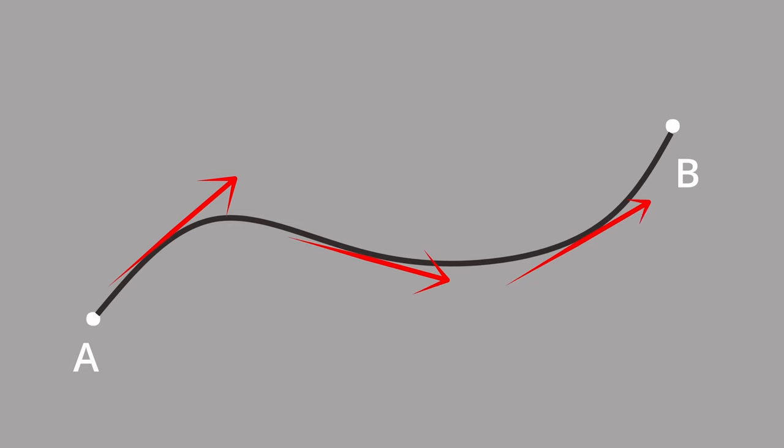If an object moves from point A to point B through a nonlinear curve, then the red arrows represent the tangential velocity at various points on this trajectory.